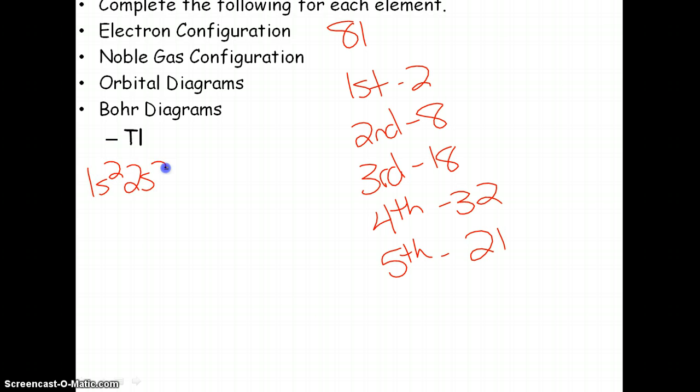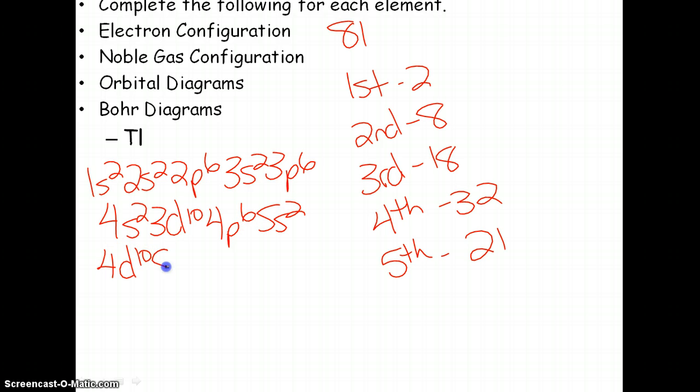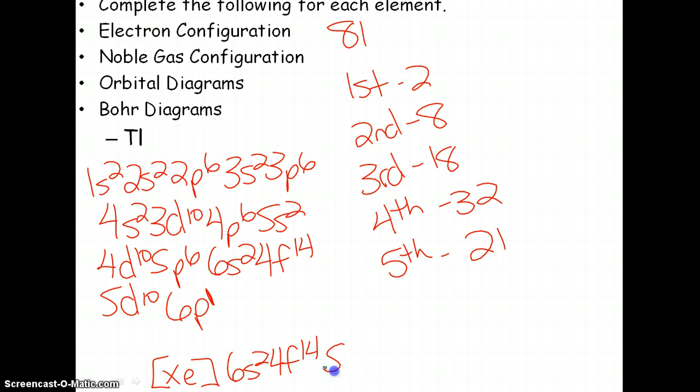Electron configurations, 1s2, 2s2, 2p6, 3s2, 3p6, 4s2, 3d10, 4p6, 5s2, 4d10, 5p6, 6s2, 4f14, 5d10, and then that leaves us with 6p1. Noble gas would be Xe, 6s2, 4f14, 5d10, and 6p1.